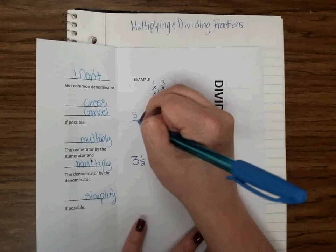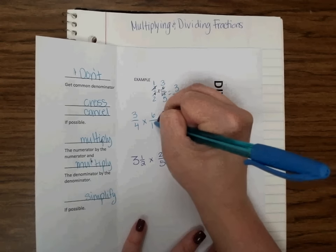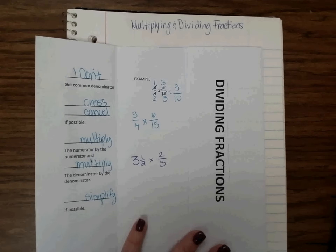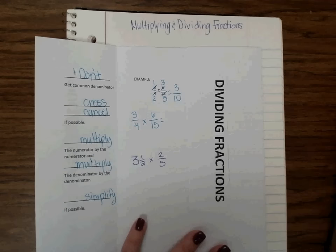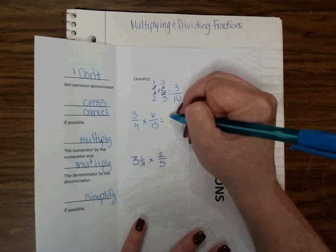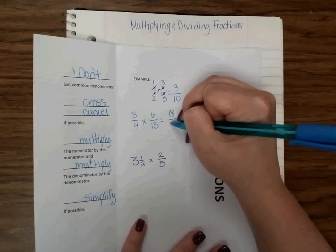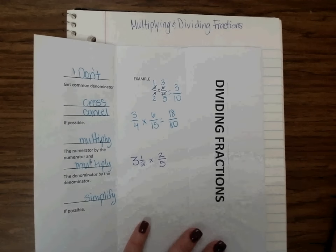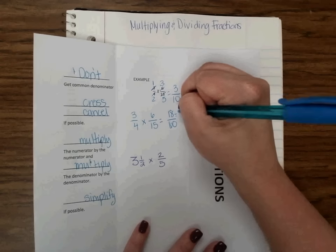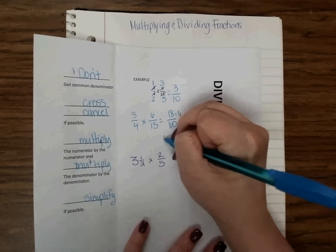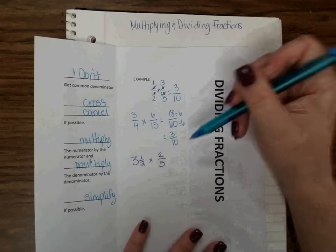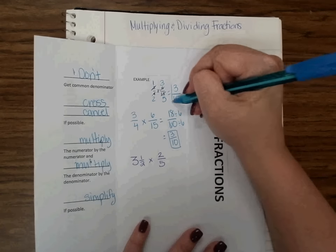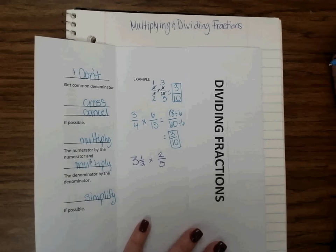Now, if we chose not to cross cancel, I can just multiply my numerators and multiply my denominators. And then I will have to simplify. So 3 times 6 is 18. 4 times 15 is 60. So I have 18 sixtieths. And then I have to simplify. What can I divide by 18 and 60? I see that they're both even numbers, so I can divide by 2. But I also know that to get to 18, that's 3 times 6. So I'm going to divide my top and bottom by 6. And that is 3 over 10. That is in its simplest form. Notice I got the same answer whether I chose to cross cancel beforehand or I simplified afterwards.